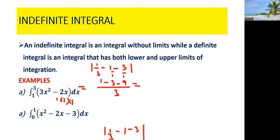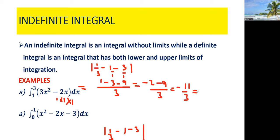So we get 1 minus 3 minus 9, all over 3. Since the signs are the same we add: 1 minus 3 is negative 2, minus 9 gives negative 11 over 3. We can also write this as negative 3 and 2 over 3. That is the final answer — that's the integral of this function.